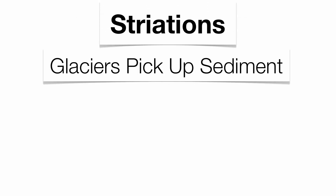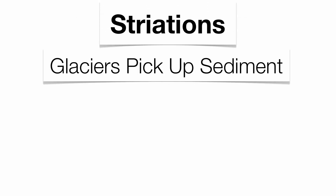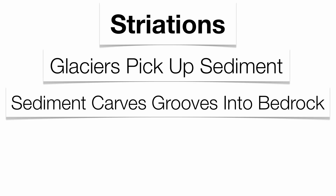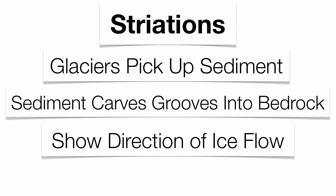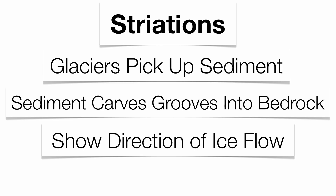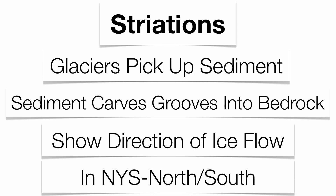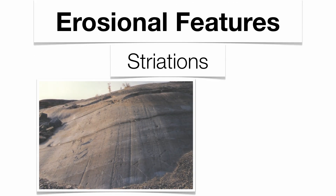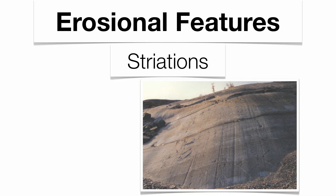You also have striations. Glaciers are like big pieces of sandpaper. As they pick sediment up, they're going to grind out the rock underneath with the sediment that's been picked up. So striations are basically parallel grooves carved into the bedrock by the sediment that is picked up. The great thing about striations is they show the direction of ice flow. In New York State, that's going to be in a north-south direction. Here's a picture of what striations might look like — notice the parallel grooves in a north-south direction.